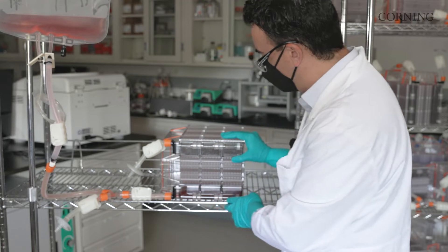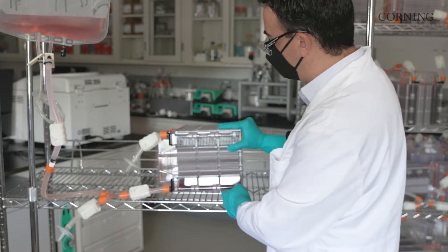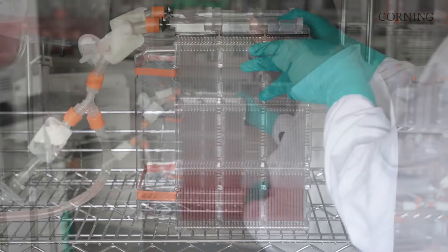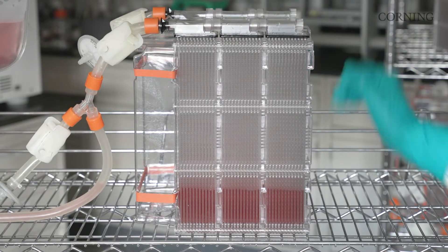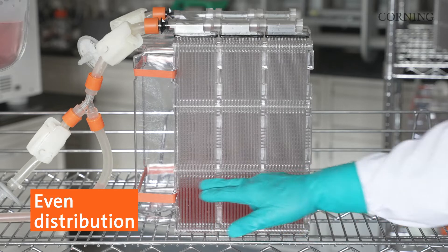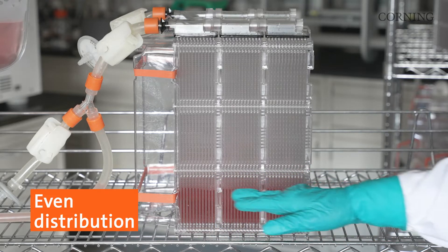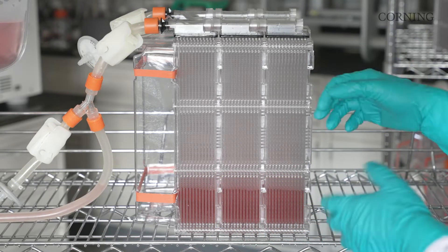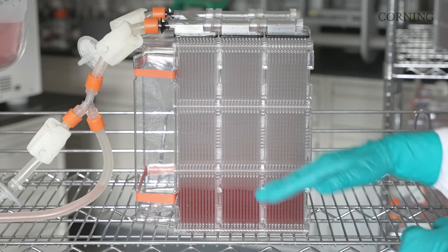We can do all the manipulations with this dissociation reagent bag still attached. First, we're going to stand this vessel up. This is our first visual reference point that we have equal volume distribution. This is a good visual confirmation - this is where you want to continually come back and reference as you are manipulating this vessel to distribute the dissociation reagent throughout the layers.